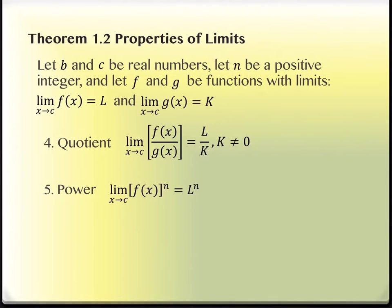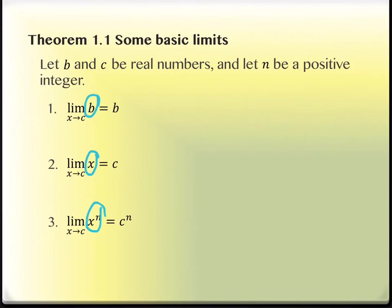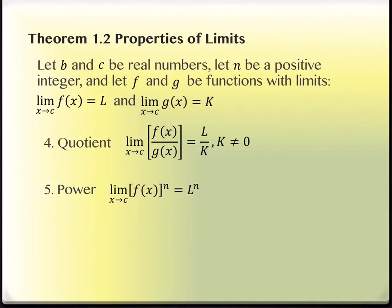The fourth one is the quotient property — the limit of f of x over g of x. It looks similar to the product property: if we can take the limit of the quotient, we can take the quotient of the two limits, L and K. We do have the extra consideration that K can't be zero for this to work. The last one is the power property: if you have a function raised to the nth power and you take the limit, you could also take the limit of the function — which is L for f of x — and then take the nth power of that.